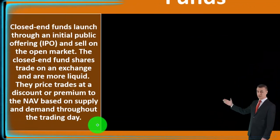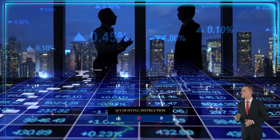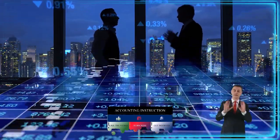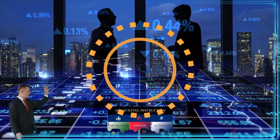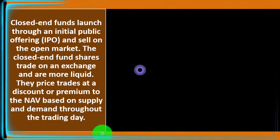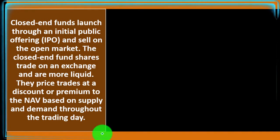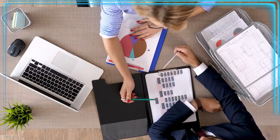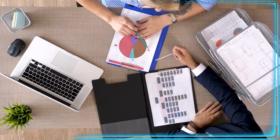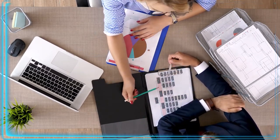Closed-end funds launch through an initial public offering — the IPO. When a stock issues an IPO, it's issuing from the company as opposed to selling on the secondary market, where most trading takes place. Closed-end fund shares trade on an exchange and are more liquid; they price trades at a discount or premium to the NAV based on supply and demand throughout the trading day — rather than being priced at the end of the day as with open-end funds. This could give some benefit if you're trading these similar to how you would trade stocks.